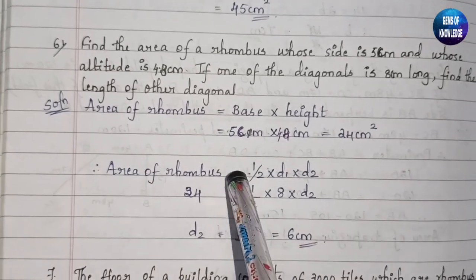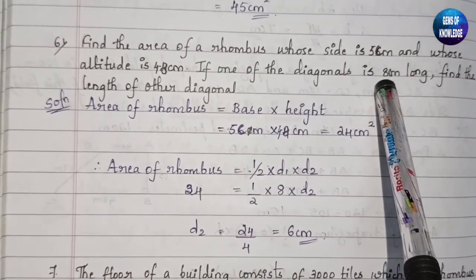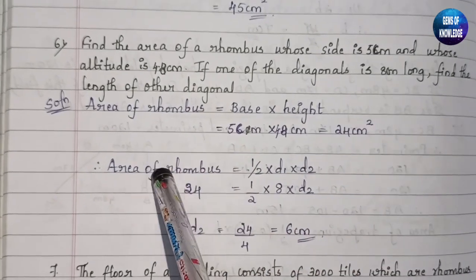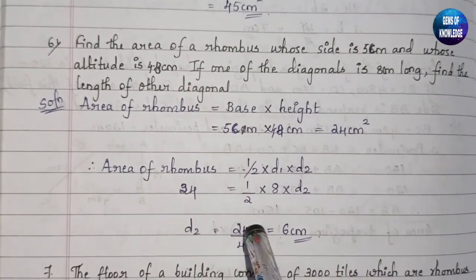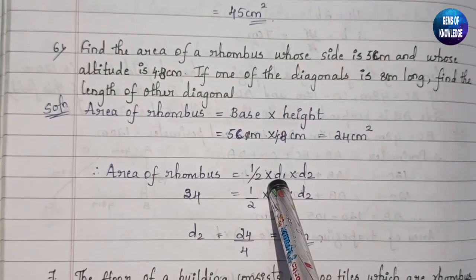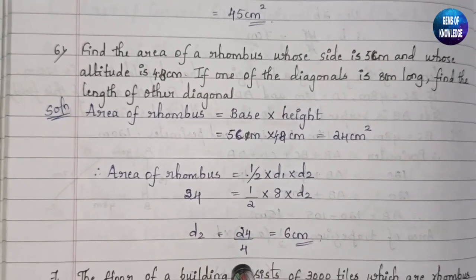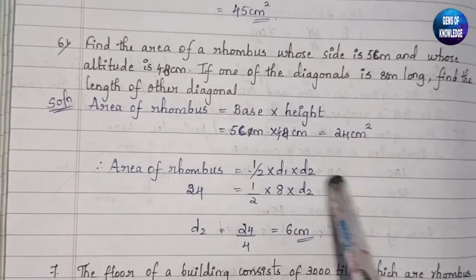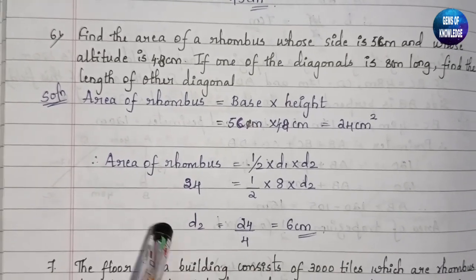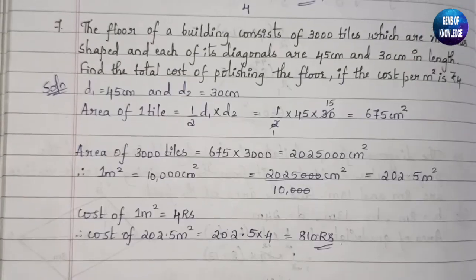Now applying the diagonal formula: Area = half into d1 into d2. Area is 24 cm², d1 is 8 cm, and d2 is unknown. So 24 = half into 8 into d2. Half into 8 gives 4, so d2 = 24 divided by 4, which equals 6 centimeters. No square unit here because we are finding a length, not an area.